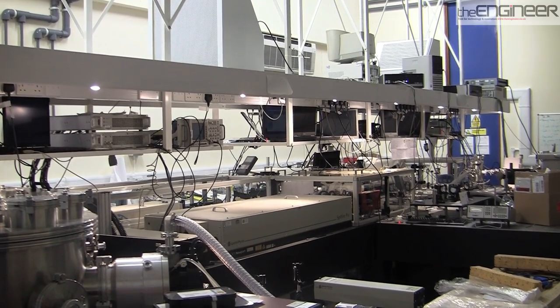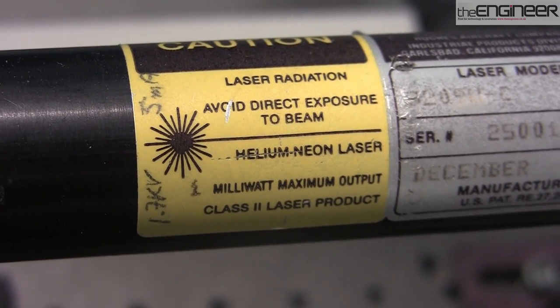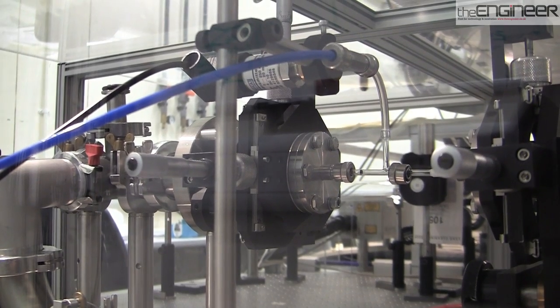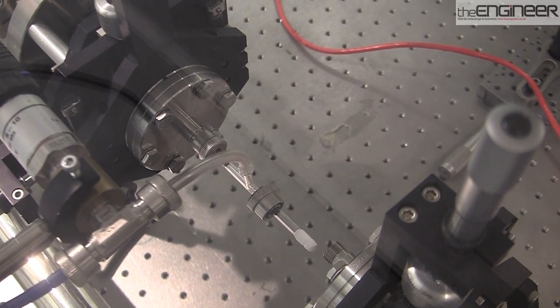Fibre lasers can work at very much higher average powers, and they can provide this very high repetition rate. Essentially the problem is getting rid of the heat that's created, and because the fibres are long and thin, they have a large surface area and they can get rid of all the heat.